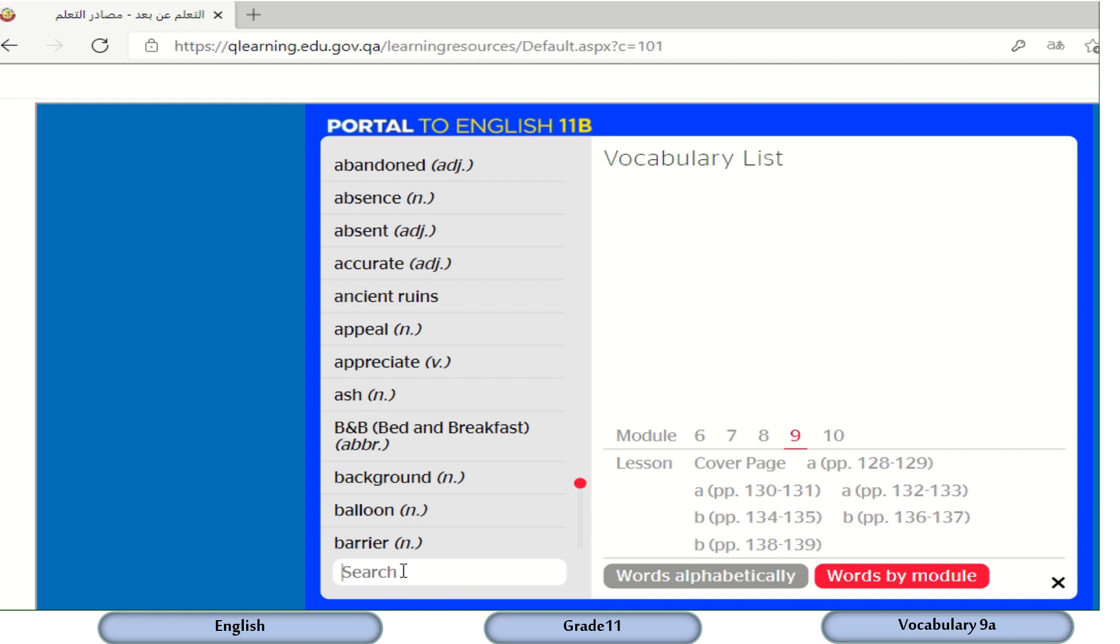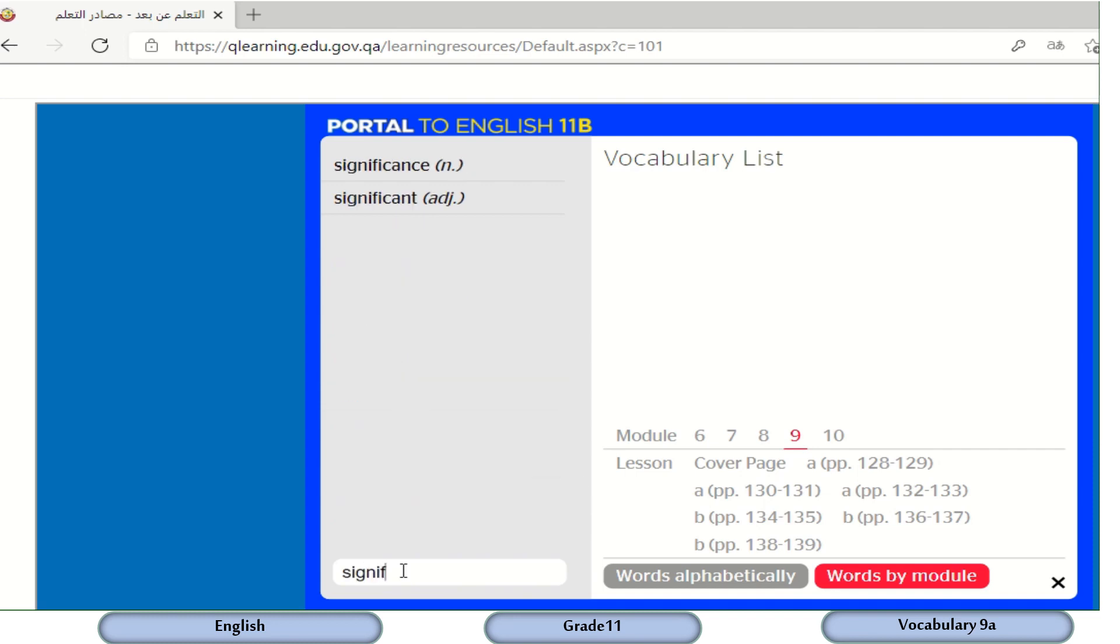If you want to check some specific words, you can write in the search box. For example, the first word in the exercise, which is significant. Let's press significant. So you want to make sure about the pronunciation, you press this icon. Significant. And here is the meaning, which means being important. Then as you can see, this e-g means the example. The day I became a father was the most significant day in my life.